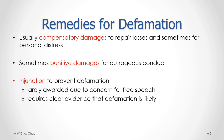The last remedy is an injunction to prevent a potential defamation. For example, if someone knows a newspaper is about to print a story about them, they could try to get an injunction to stop the newspaper from printing it. This remedy is generally rarely awarded because courts don't want to impede freedom of expression. To get an injunction, a court must be convinced with clear evidence that if the story is published, defamation will likely result.